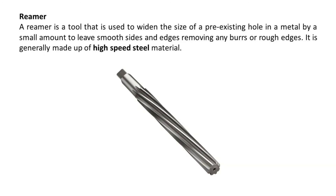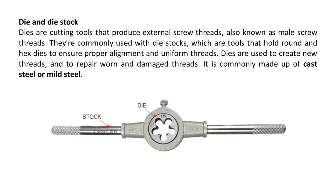A reamer is a tool used to widen the size of a pre-existing hole in metal by a small amount, leaving smooth sides and edges by removing any burrs or rough edges. It is generally made up of high-speed steel. Dies are cutting tools that produce external screw threads, also known as male screw threads. They are commonly used with die stocks, which hold round and hex dies to ensure proper alignment and uniform threads. Dies are used to create new threads and to repair worn and damaged threads. They are commonly made up of cast steel or mild steel.